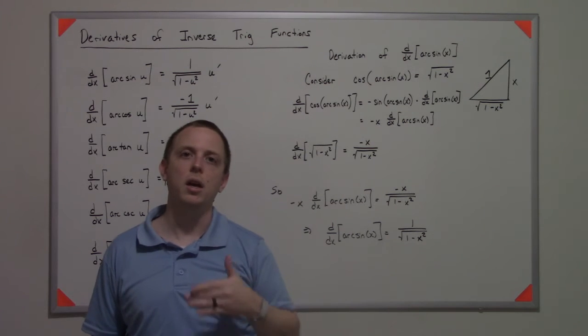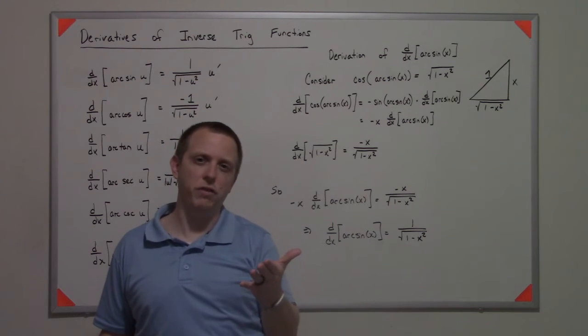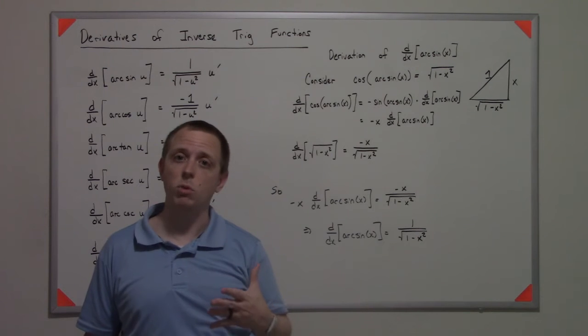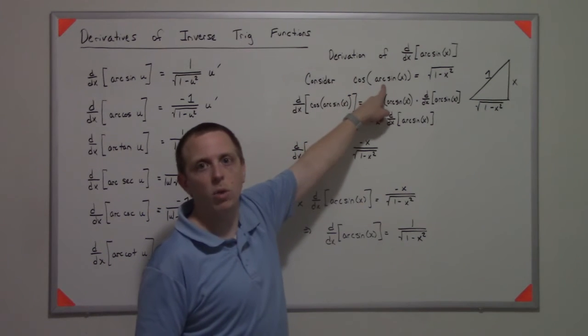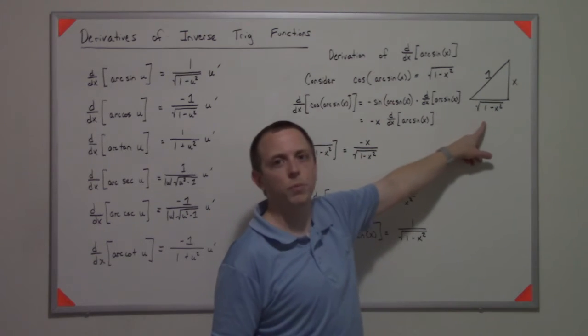It might be natural to say I'm going to deal with sine of arc sine, and that's perfectly fine to do as well. This technique would work if you did that. But if I do cosine of arc sine, I have to construct a triangle.